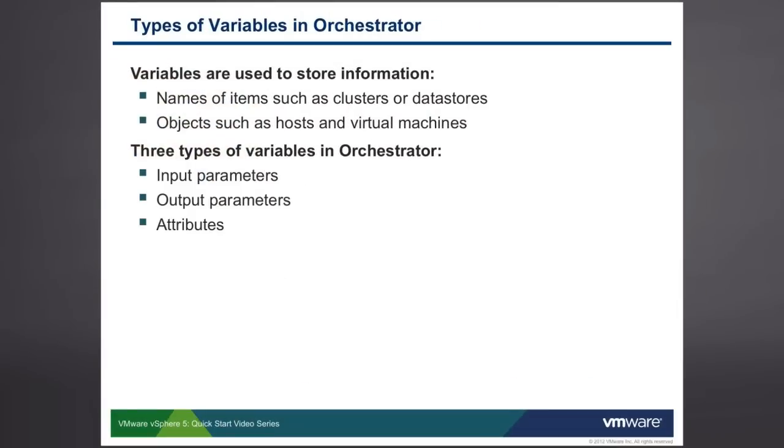In orchestrator, there are different types of variables. Variables are used to store information such as the names of items, such as clusters and data stores. Variables can also be used to store things such as objects for virtual machines, hosts, data stores, and networks. Ultimately, in orchestrator, there are four different types of variables. You can see three of them listed here: input parameters, output parameters, attributes, and the fourth type of variable is one that we discuss in class.